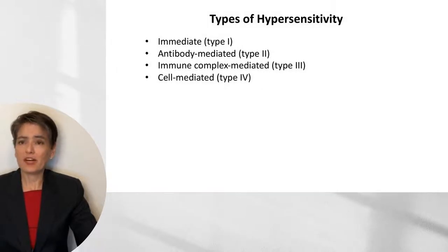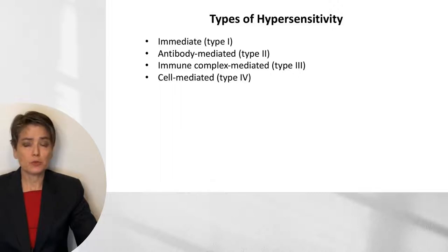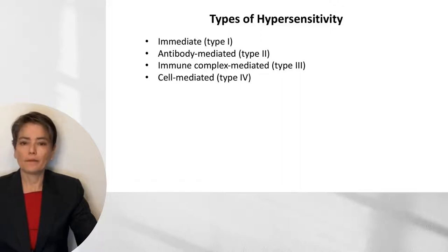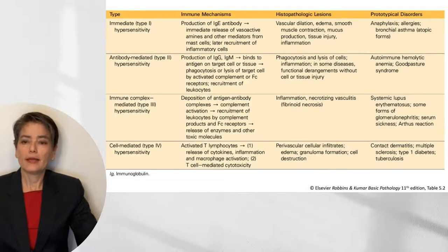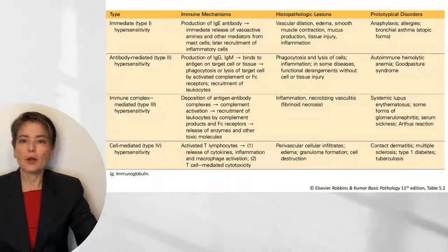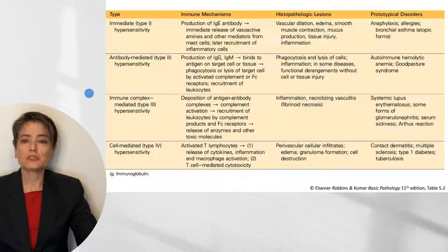There are four types of hypersensitivity: immediate, or type 1; antibody-mediated, or type 2; immune complex-mediated, or type 3; and cell-mediated, type 4. This is a table from Robbins and Kumar, Basic Pathology, 11th edition. While I'm going to work through the immune mechanisms in this video, I would encourage you to use this table as a review for your studies.